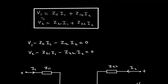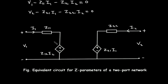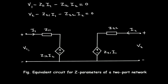Again, the equation for Z parameter is V1 is equal to Z11 I1 plus Z12 I2, and V2 is equal to Z21 I1 plus Z22 I2. When we take the RHS to the left side, we get V1 minus Z11 I1 minus Z12 I2 equals 0, and V2 minus Z21 I1 minus Z22 I2 equals 0. This is also a KVL equation, and from this we can draw the equivalent circuit for Z parameters of a two-port network.